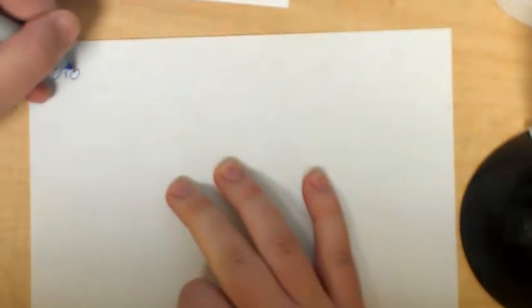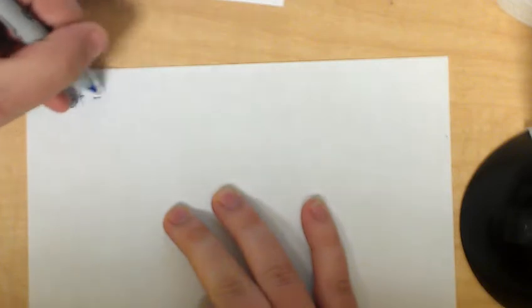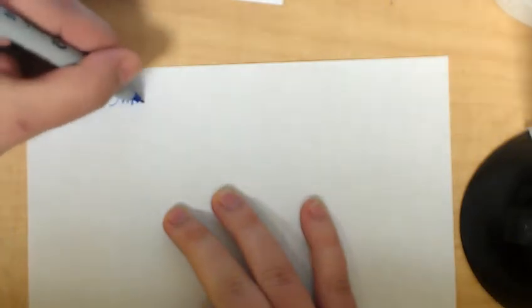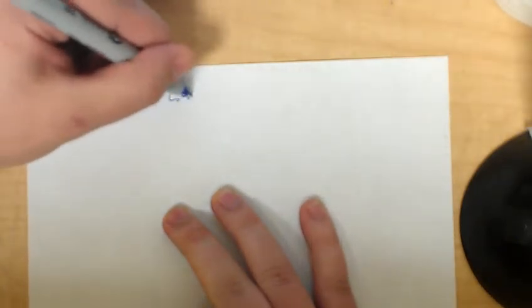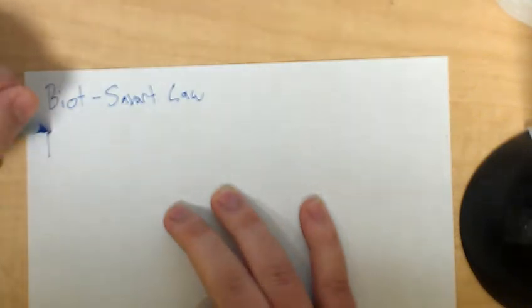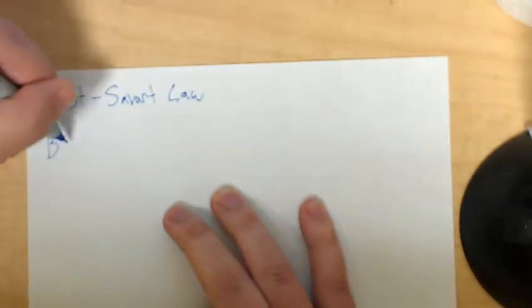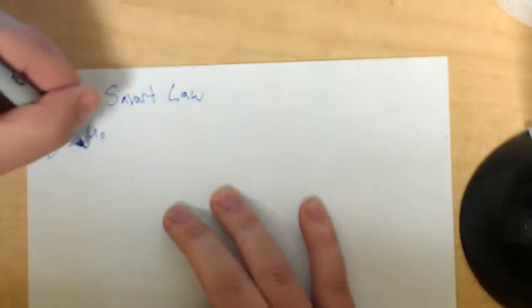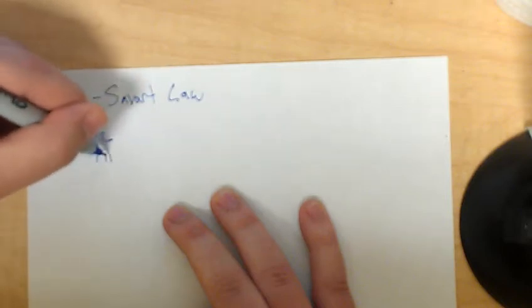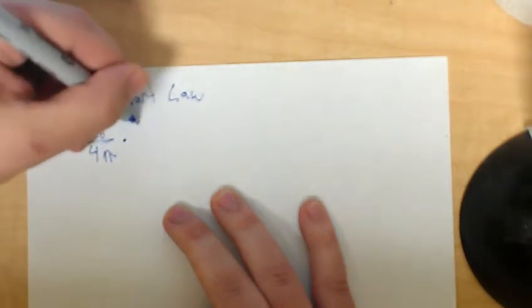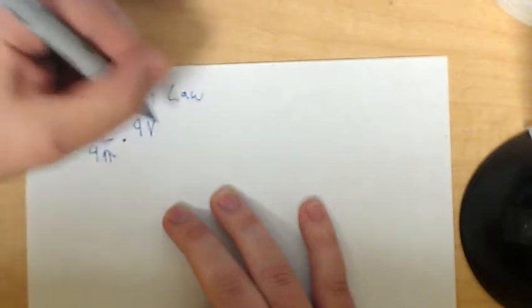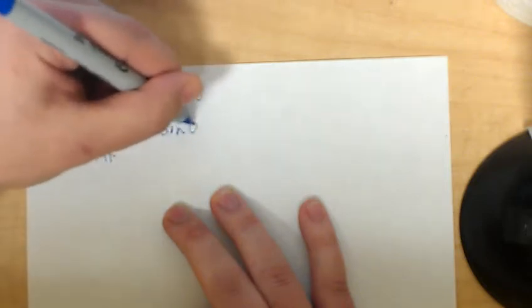So, the Biot-Savart law, spelled like this... It goes something like this. The B-vector equals u-naught over 4 pi times QV sine theta over r-squared.